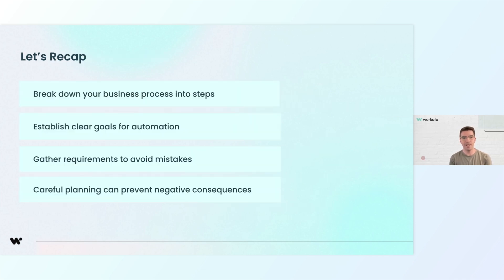Planning is the foundation of a successful automation project. By understanding your business process, asking the right questions, and preparing thoroughly, you can set yourself up for success. In the next section, we'll take this planning framework and dive deeper into building automations that eliminate manual work and optimize your workflows.